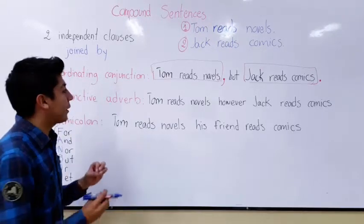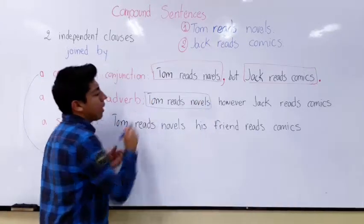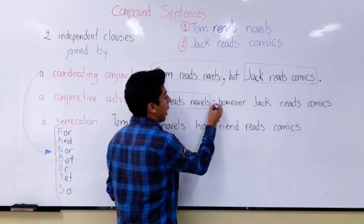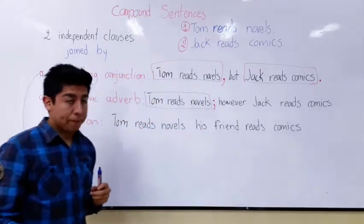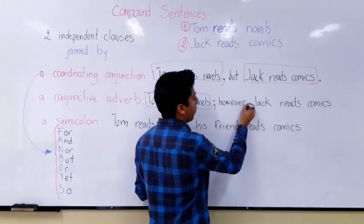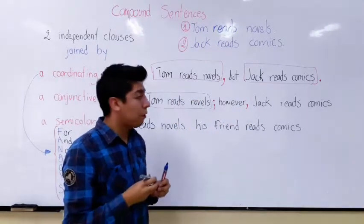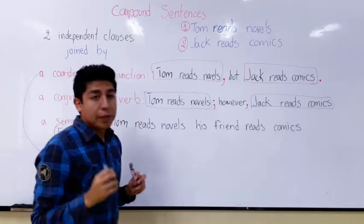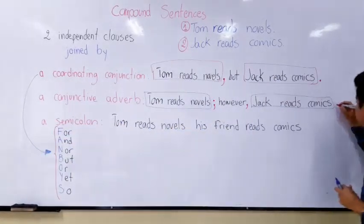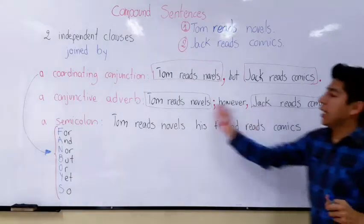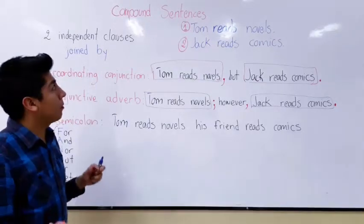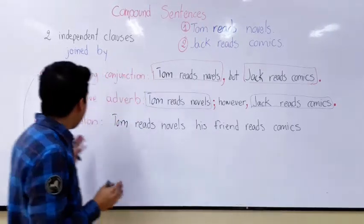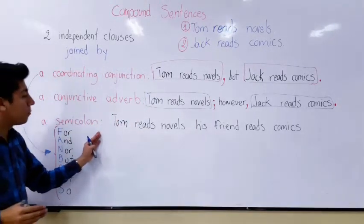The punctuation in this case is: first independent clause, then before the conjunctive adverb I use a semicolon, and after the conjunctive adverb I use a comma. Then I add my second independent clause, and at the end of the sentence I use a period. This is a compound sentence using a conjunctive adverb.